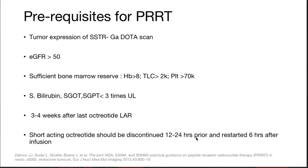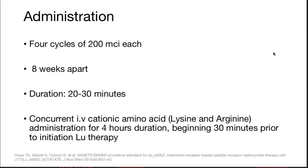Short-acting octreotide should be discontinued 20 to 24 hours prior to PRRT and restarted 6 hours after infusion. It is generally administered in four to six cycles of 200 millicuries each, generally eight weeks apart, given hematologic and renal toxicity. To allow recovery and prevent toxicity, cycles are spaced 8 weeks apart.